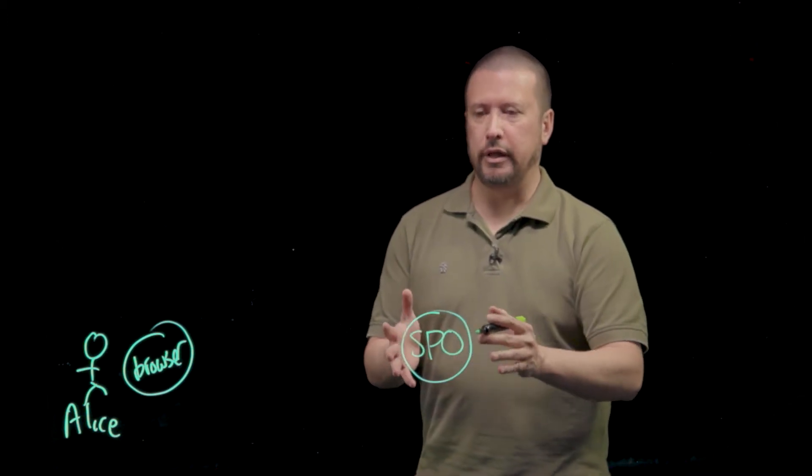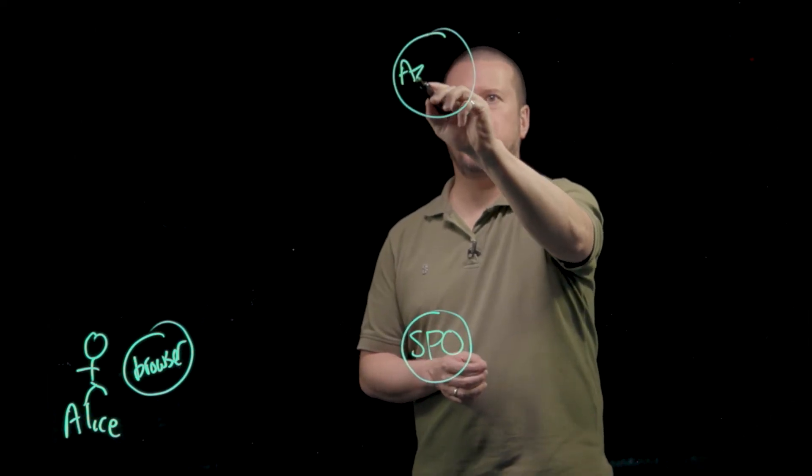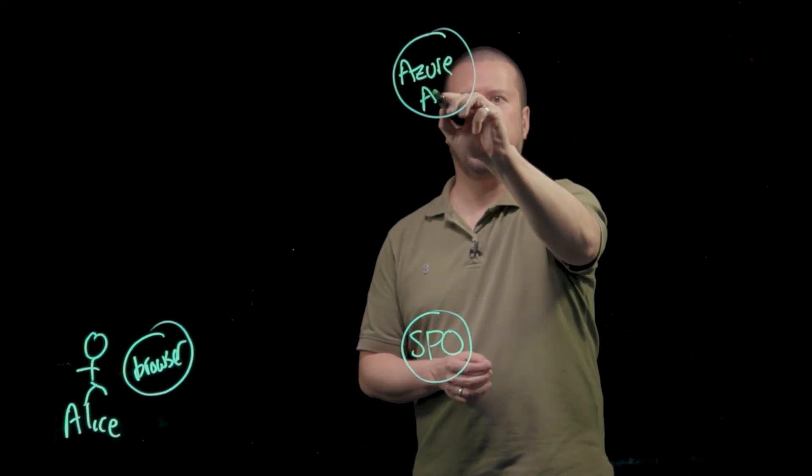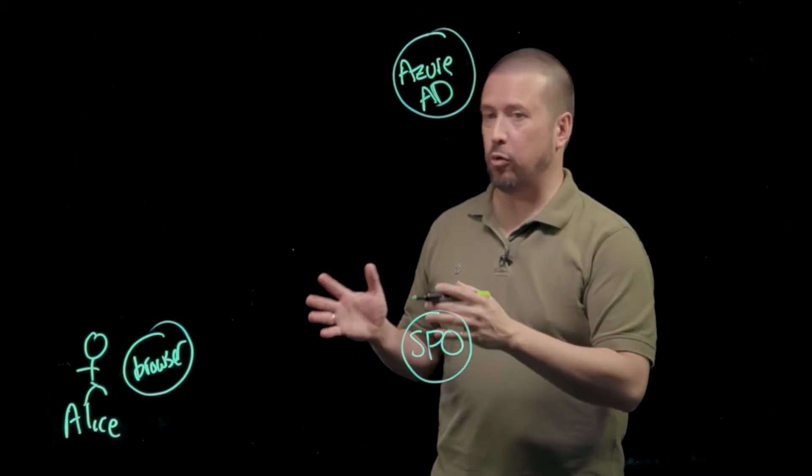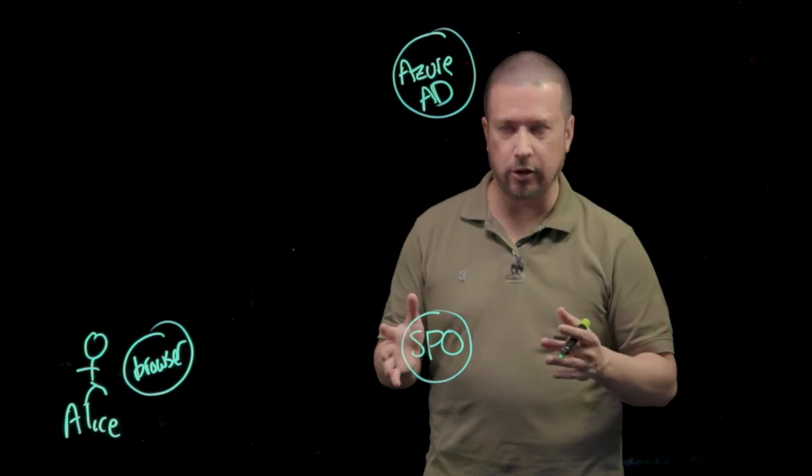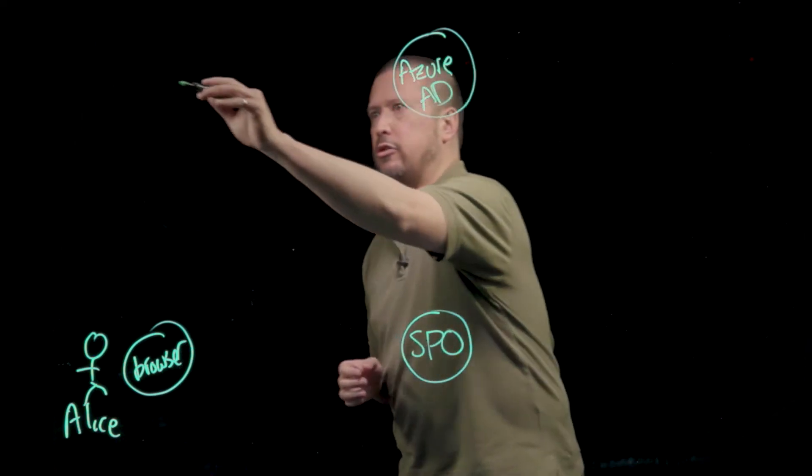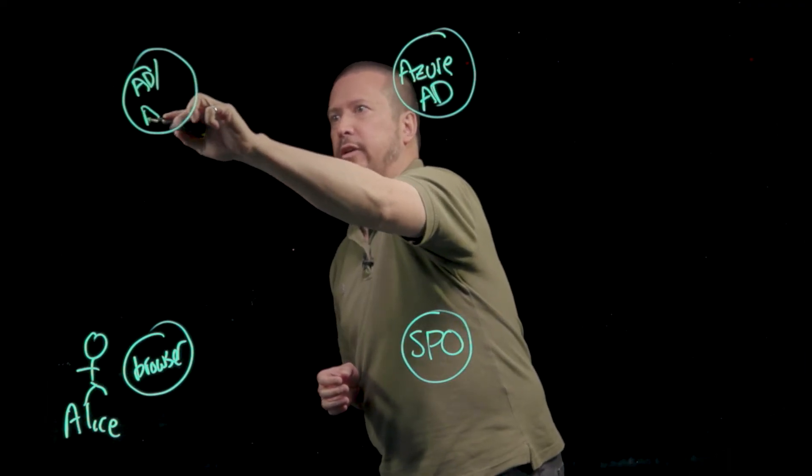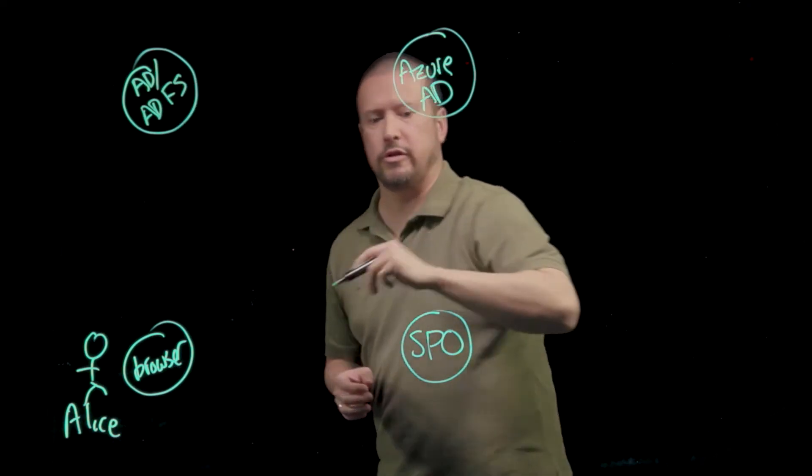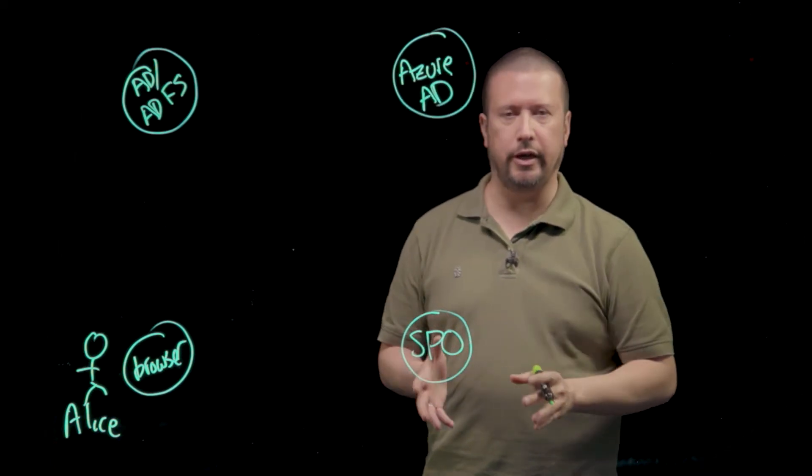SharePoint Online trusts an identity provider that we all know and love called Azure Active Directory. Let's do a scenario where Alice's organization is actually federated, so her credentials are not stored in Azure AD. Her credentials are actually on-premises at a combination of Active Directory and Active Directory Federation Services. Let's look at what happens when Alice comes to authenticate to SharePoint Online.